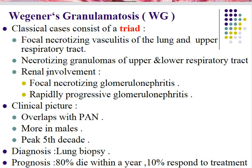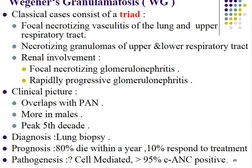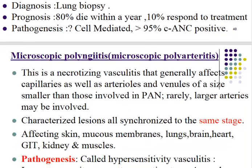The clinical picture of Wegener's granulomatosis can overlap with polyarteritis nodosa due to protean manifestations. It is more common in males, with peak incidence in the fifth decade. Diagnosis by lung biopsy is essential because the lung is a major component of the triad. In addition to focal necrotizing vasculitis, there is necrotizing granuloma of the respiratory tract. Regarding prognosis, 80% die within a year; 10% respond to treatment. Pathogenesis may relate to cell-mediated immunity, documented by positive antineutrophil cytoplasmic antibody (ANCA).